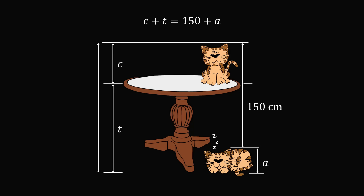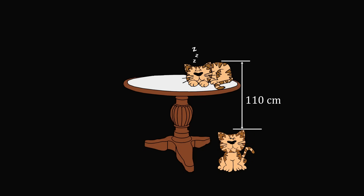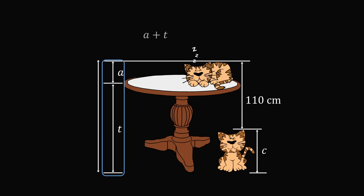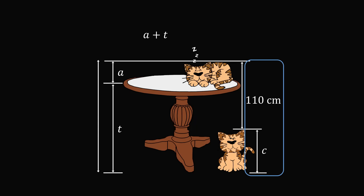Now let's analyze the other diagram. Here we have the same table, but the positions of the sleeping and sitting cats are exchanged. We still have the same three unknowns — t, c, and a — and between the two diagrams these unknowns have the same values. We can now measure the distance from the floor to the top of the sleeping cat in two different ways. On the left side this is a plus t, and on the right side this is 110 plus c. So we have the equation: a + t = 110 + c.